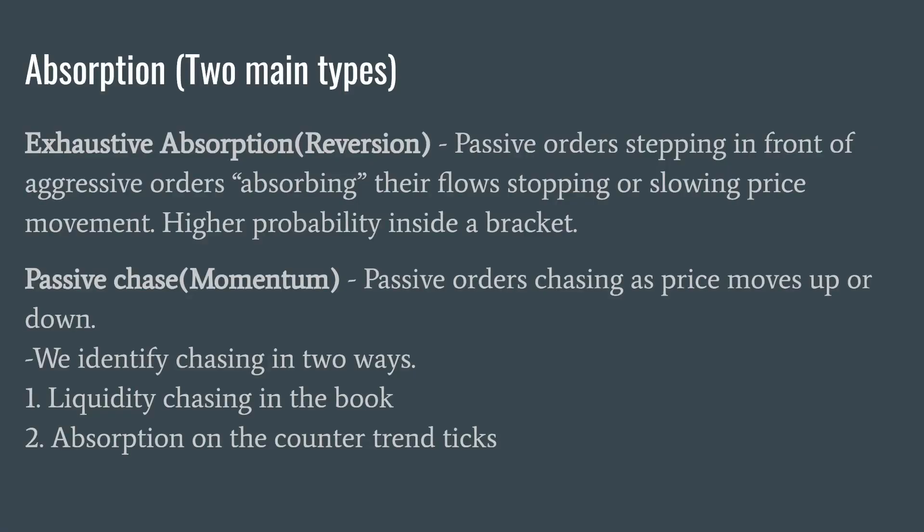So what are the two most common types of absorption? The first version we should already be roughly familiar with — this is the one that everybody talks about already. This is exhaustive absorption that leads to reversion. When passive orders step in front of the aggressive orders absorbing their flows and stopping or slowing the directional price movement, it's important to point out that this has a much higher probability of playing out when we're inside a bracket. Alternatively, we have the passive chase, which is the momentum version of absorption. This is when passive orders are chasing price up or down as it's moving.